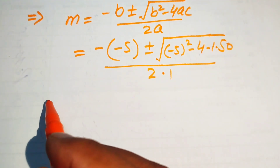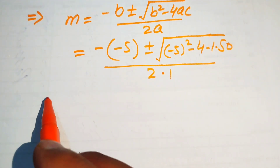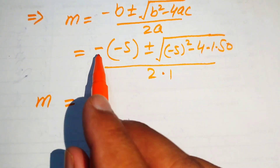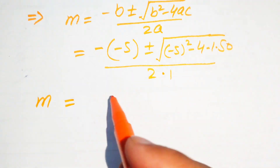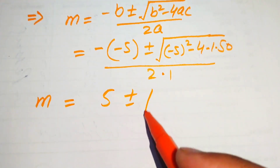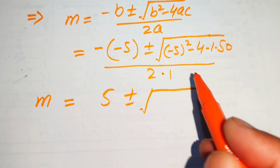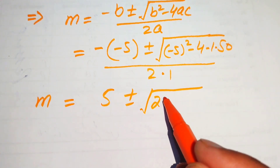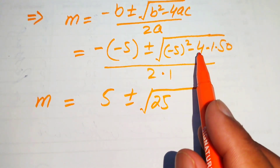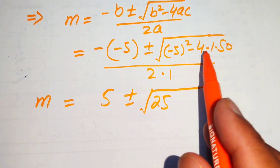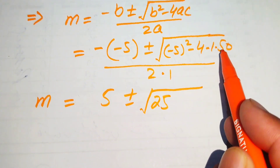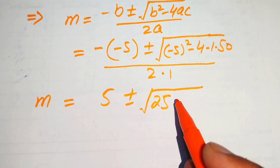Simplifying: negative times negative gives positive 5, plus or minus the square root of negative 5 squared equals 25, and 4 times 1 times 50 equals 200.